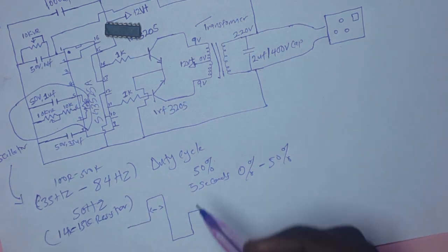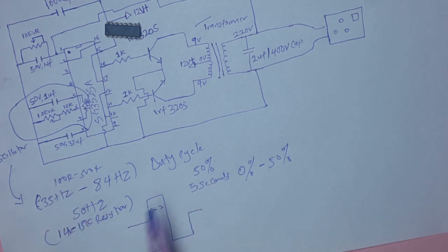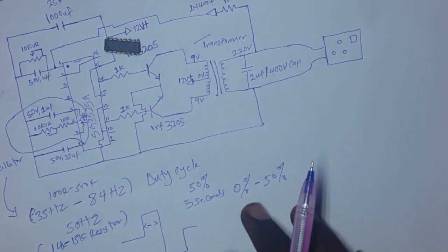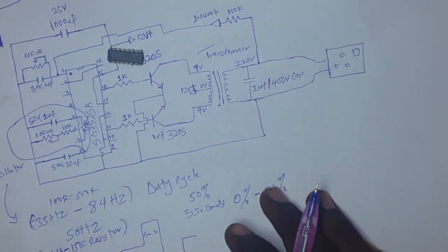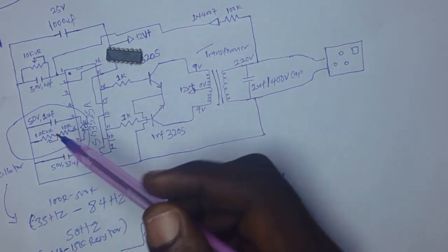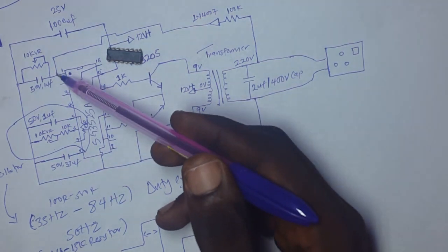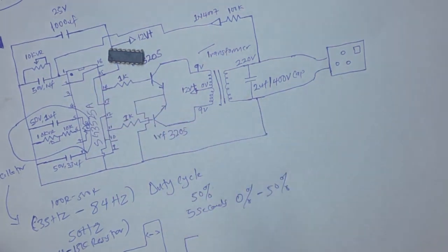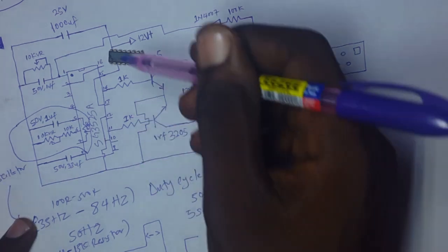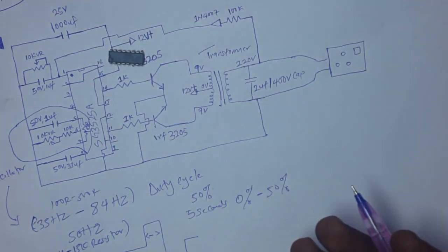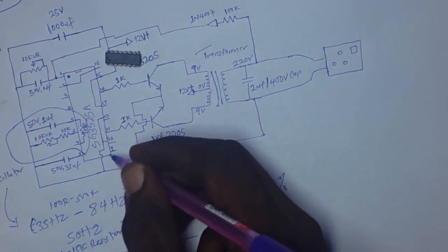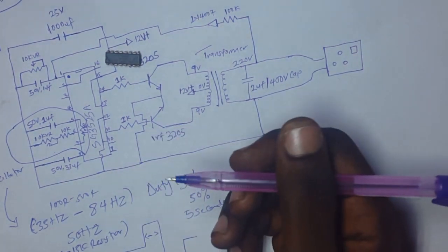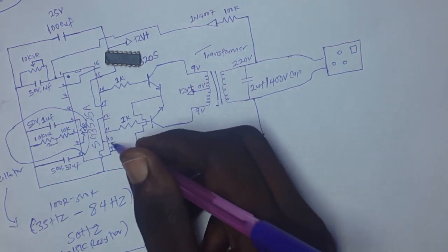Pin 9 is the compensation pin. This pin is usually used in combination with pin 1 to compress the feedback voltage and make it proper. You don't necessarily need to use it. Pin 10 is the shutdown pin.